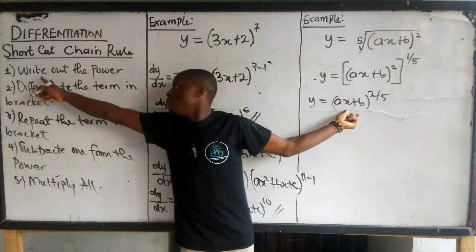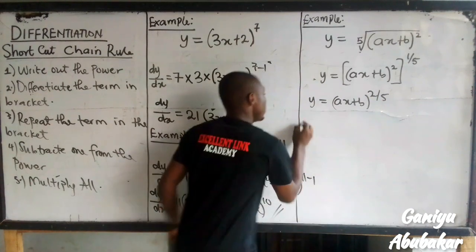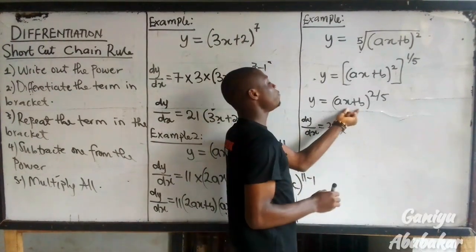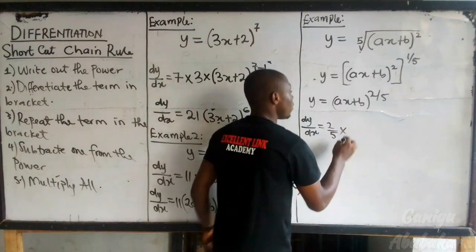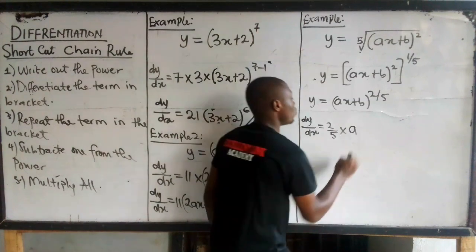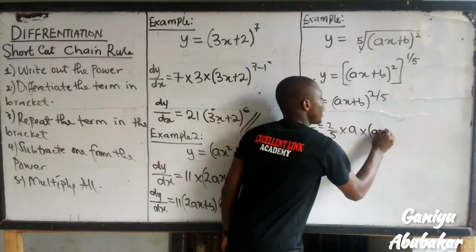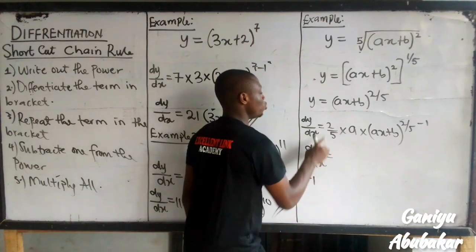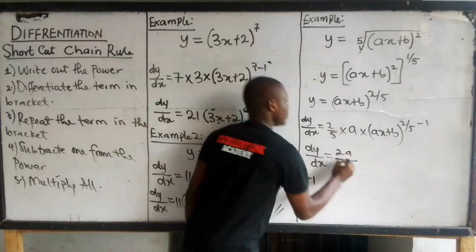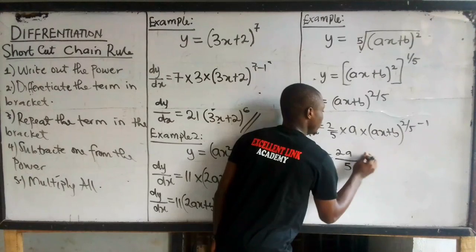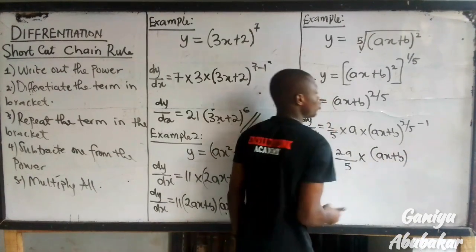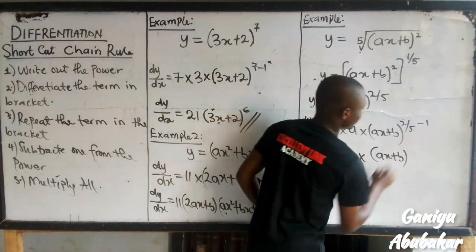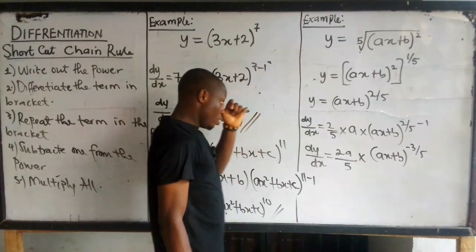At this point I'll apply the chain rule shortcut. Write out the power: the power is 2 over 5. So dy/dx equals 2 over 5. Multiply by the differentiation of the term in brackets — differentiating ax + b gives a. Then repeat the term in brackets: multiply by (ax + b) to the power 2 over 5. Then subtract 1, giving 2 over 5 minus 1, which becomes minus 3 over 5.